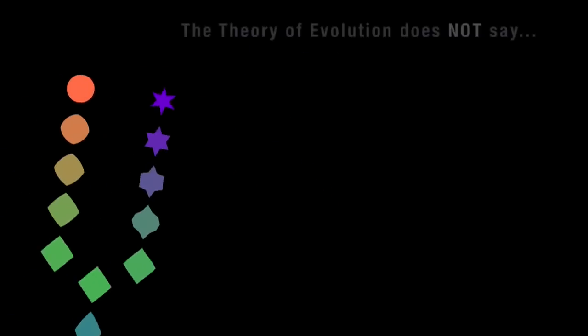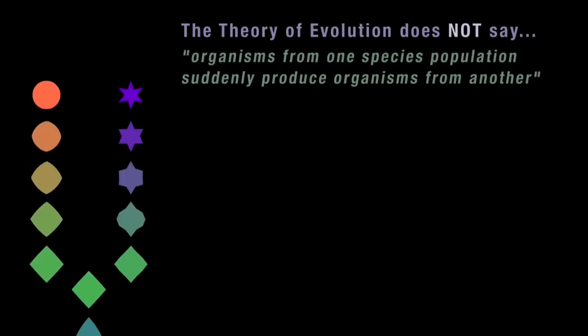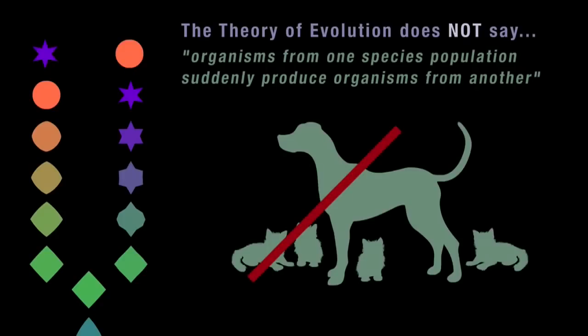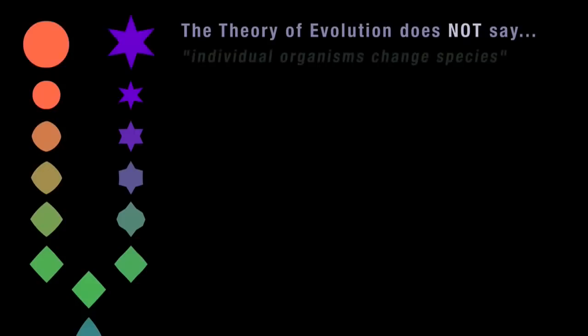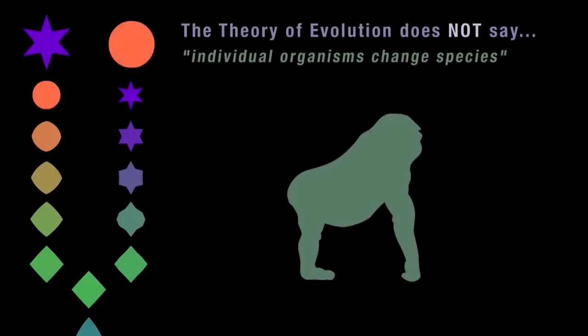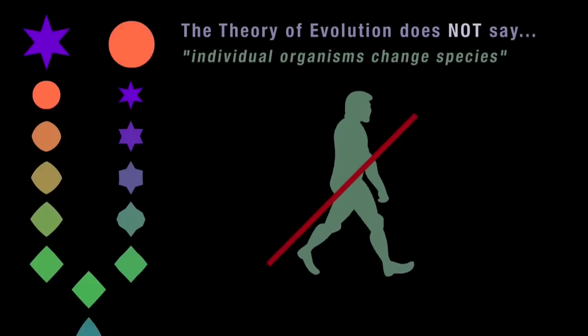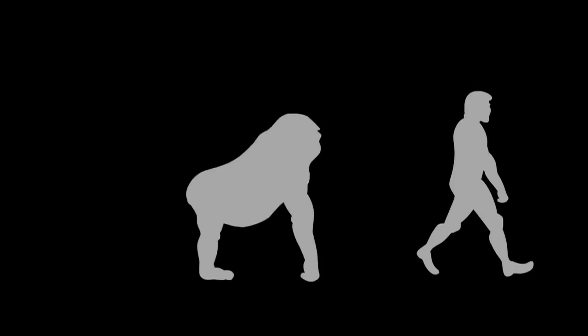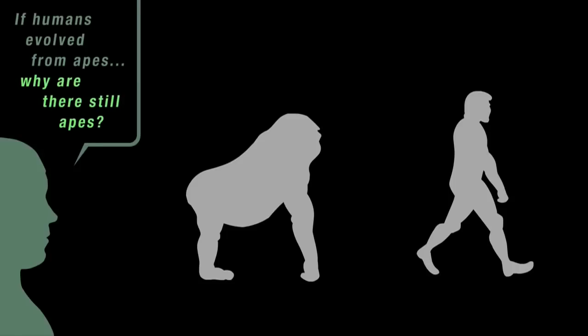The theory of evolution doesn't say that organisms from one species suddenly produce organisms from another — dogs don't produce cats. Nor does it say that individual organisms change species — individual apes don't morph into humans. While we're on the subject of apes and humans, there's a common misunderstanding about our evolutionary relationship with apes, revealed by the question: if humans evolved from apes, why are there still apes?